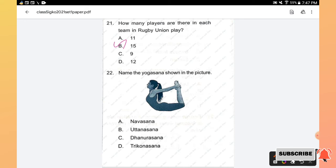Question number 22: Name the yogasana shown in the picture. Navasana, Uttanasana, Dhanurasana, and Trikonasana. The right answer is option C, Dhanurasana.